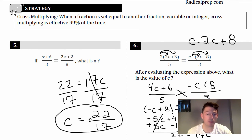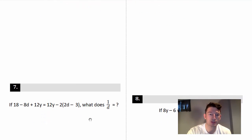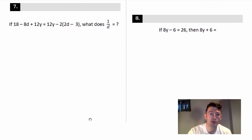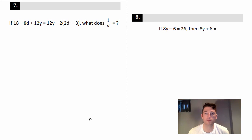You can find a decimal answer, but I'll just leave it like that right now. Okay, let's move on. What do we got next? Number 7. All right, so it looks like we're getting more difficult here, bigger examples. So this one says 18 - 8d + 12y = 12y minus all that muck. What is 1/d? So notice now that they don't want d, they want 1/d, so pay attention to that.